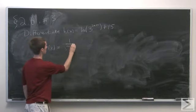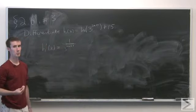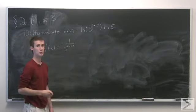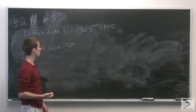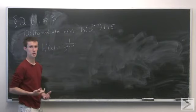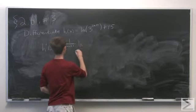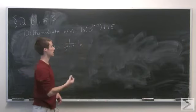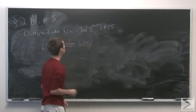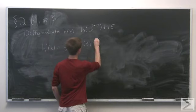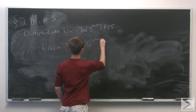And now we need to multiply by the derivative of the inside, so the derivative of the function 3 to the 2x plus 1, which is the derivative of the general exponential function. So we first take the natural log of the base, which is 3, and then repeat the function. So 3 to the 2x plus 1.